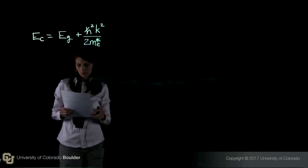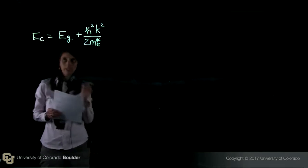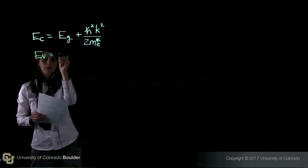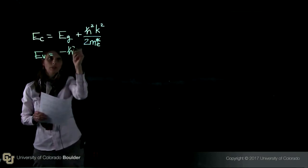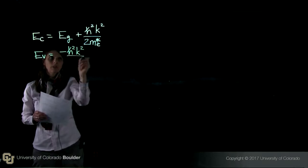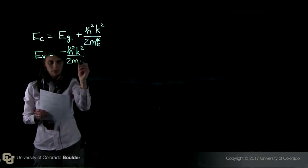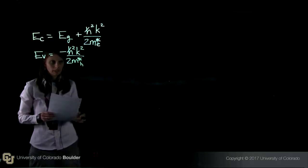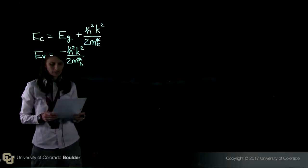And we can also write that E_V equals minus h-bar squared k squared over 2m star h, which is the effective mass of the hole in the valence band.